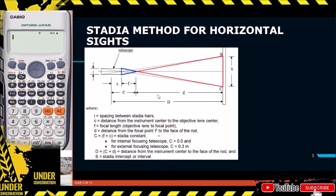We have small letter d, which refers to the distance from the focal point F up to the face of the rod — the distance from where the focus concentrates up to the portion where you take the rod reading. Then we have the Stadia constant, capital C, which is the sum of small c plus focal length f, so C equals f plus c. That is the Stadia constant.